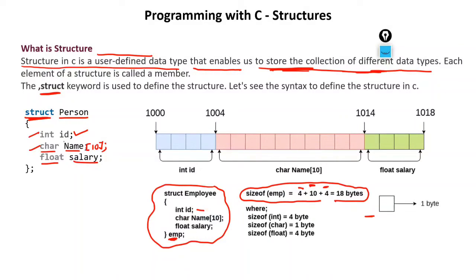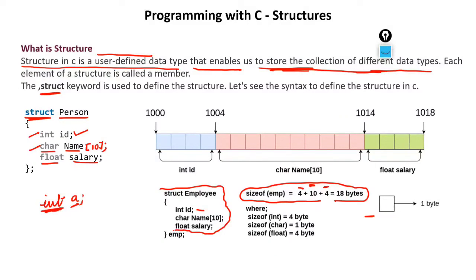The variable 'imp' is a variable of a structure — similar to how 'a' is a variable of integer. Just as int is a data type and 'a' is its variable, struct is the user-defined data type and whatever you write after it becomes the variable. Size of integer is 4 bytes, character array of size 10 is 10 bytes, and float is 4 bytes — that is the memory representation of this structure.